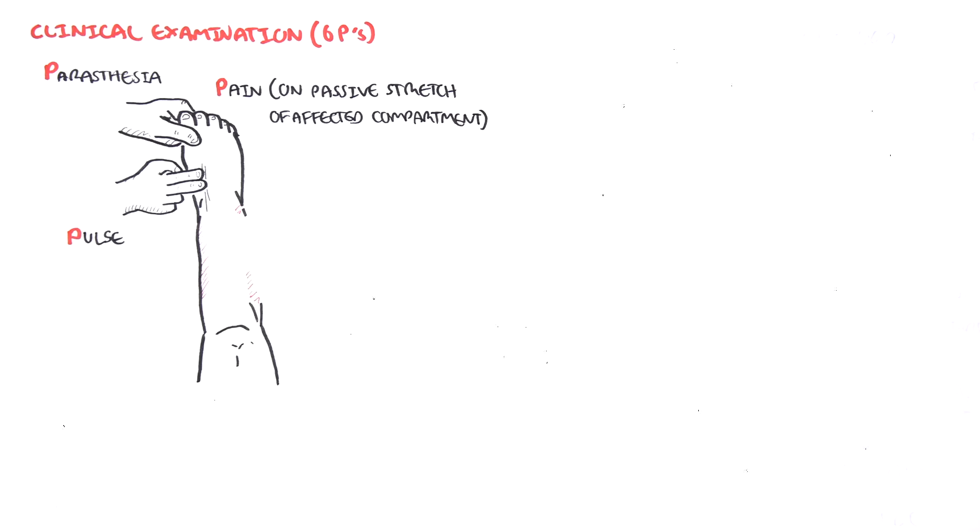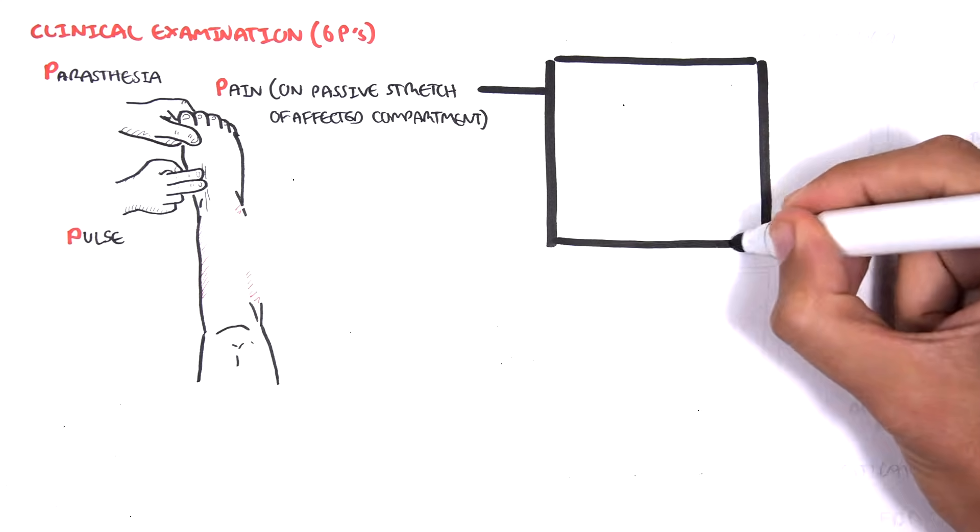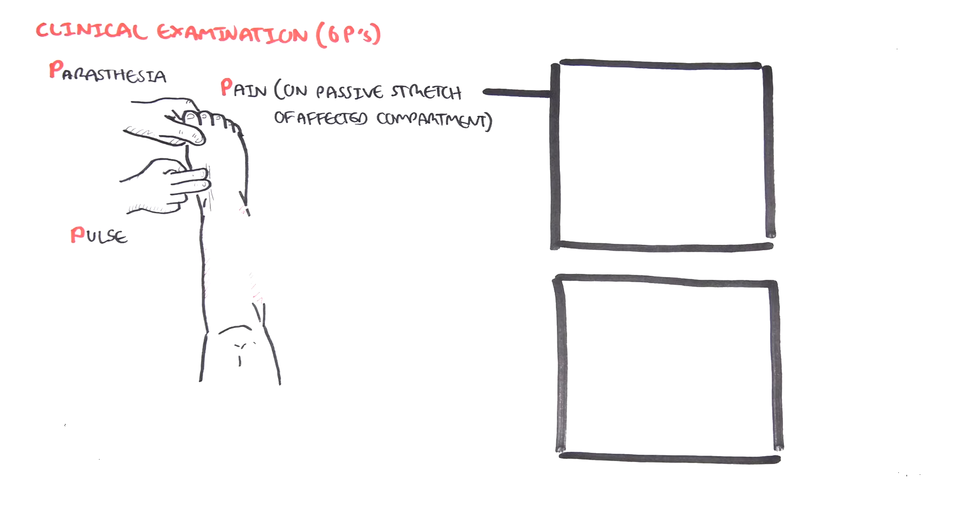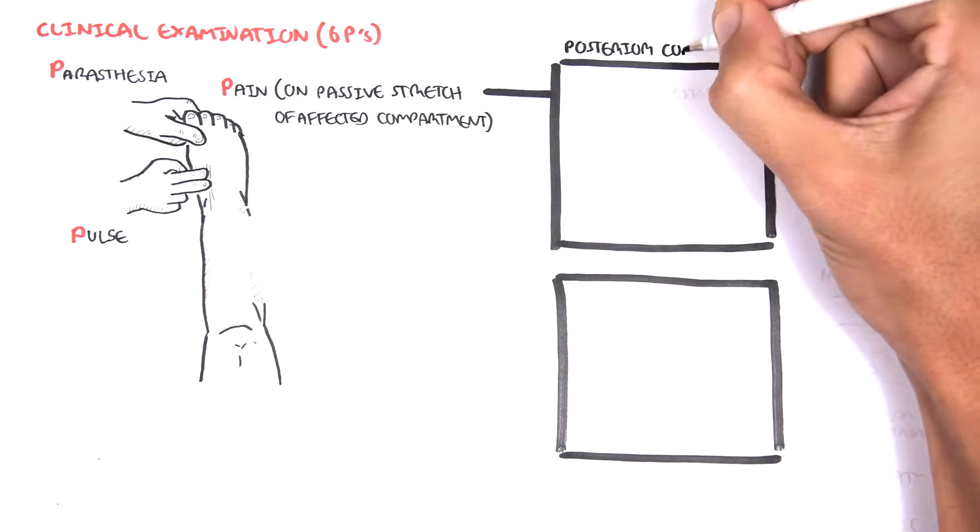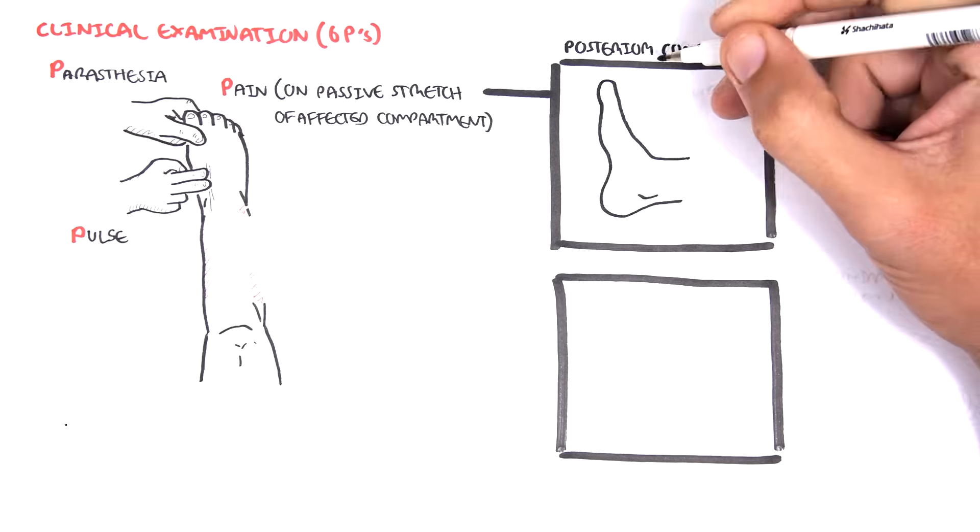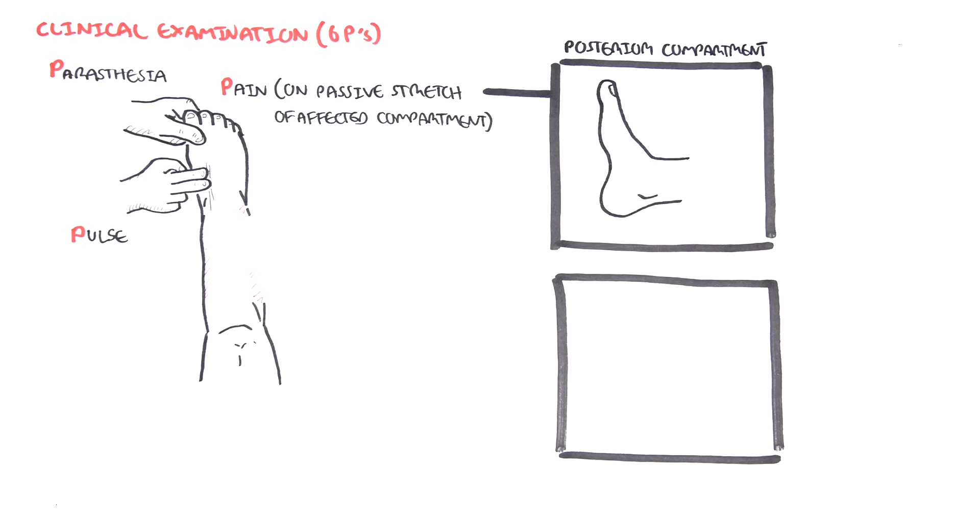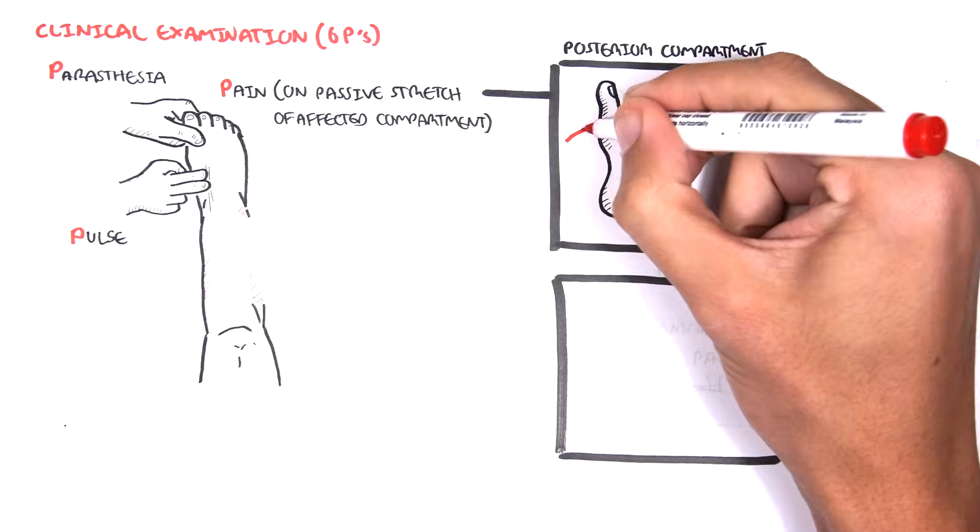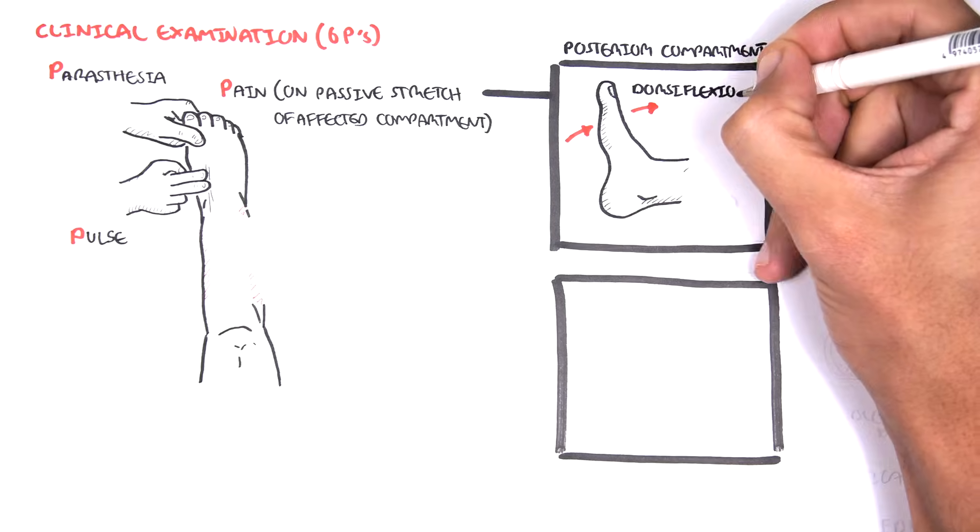Pain can even be aggravated by passive stretching of the affected compartment. For example, if there is posterior compartment involvement, dorsiflexion will stretch the posterior compartment, aggravating the pain on the posterior compartment.